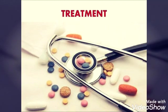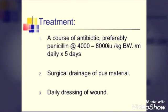For treatment, we can go for a course of antibiotics, preferably penicillin 4000 to 8000 units per kg body weight. Then surgical drainage of pus material and daily dressing of the wound. Since it is caused by bacteria, antibiotic penicillin is given, and surgical drainage is done so that the pus comes out, followed by daily dressing to heal the wound.